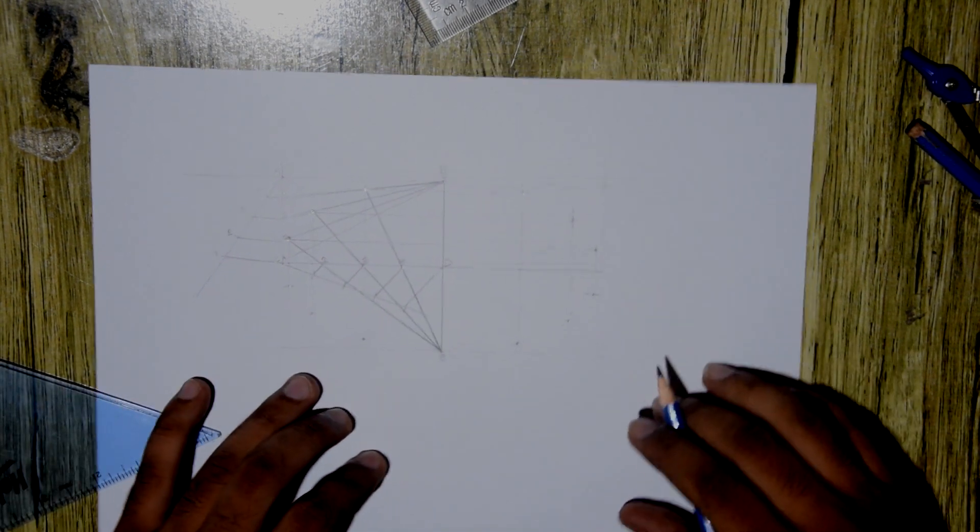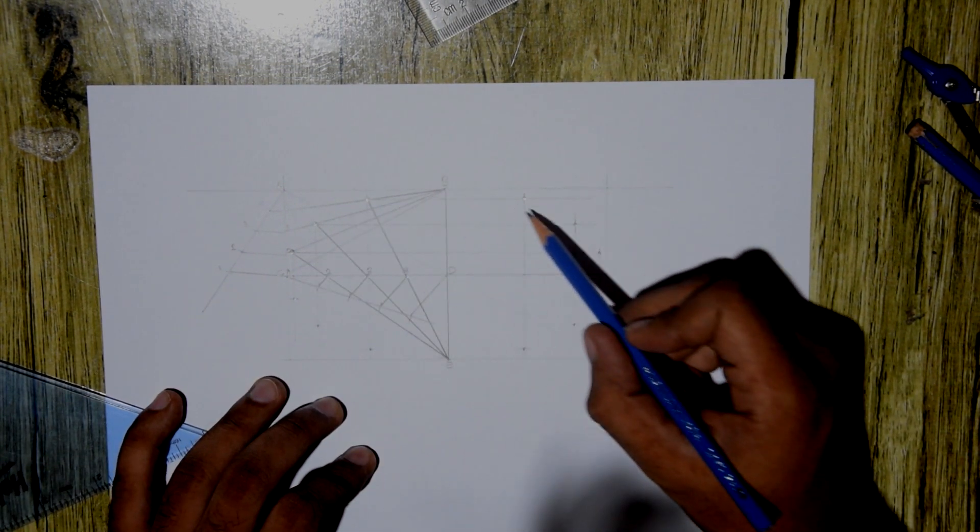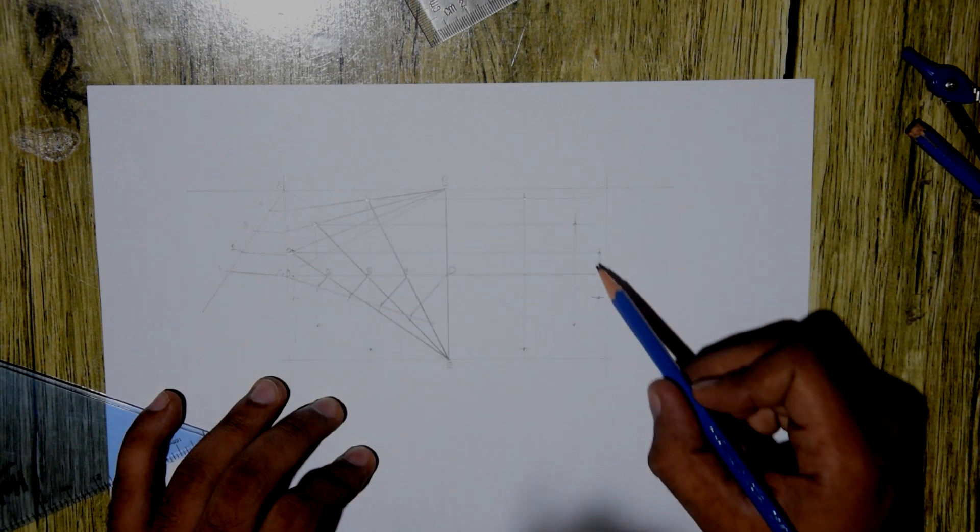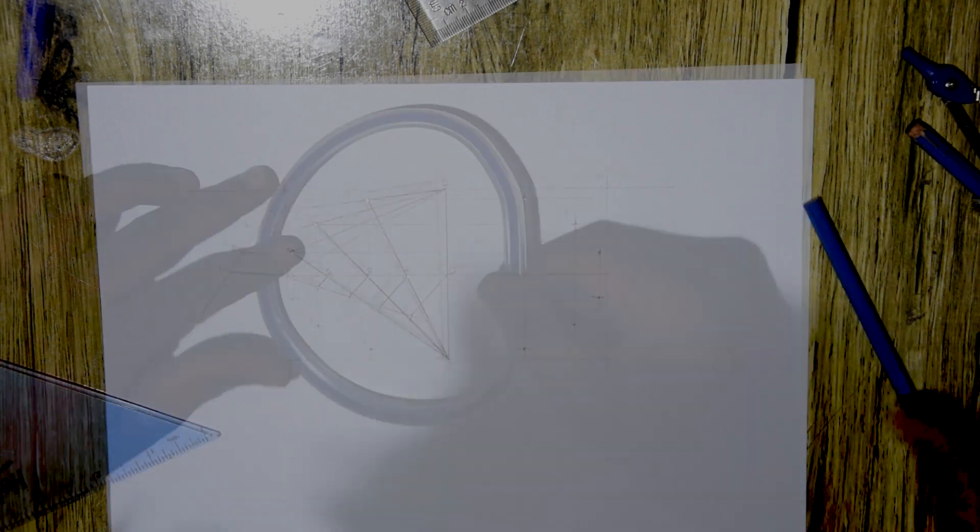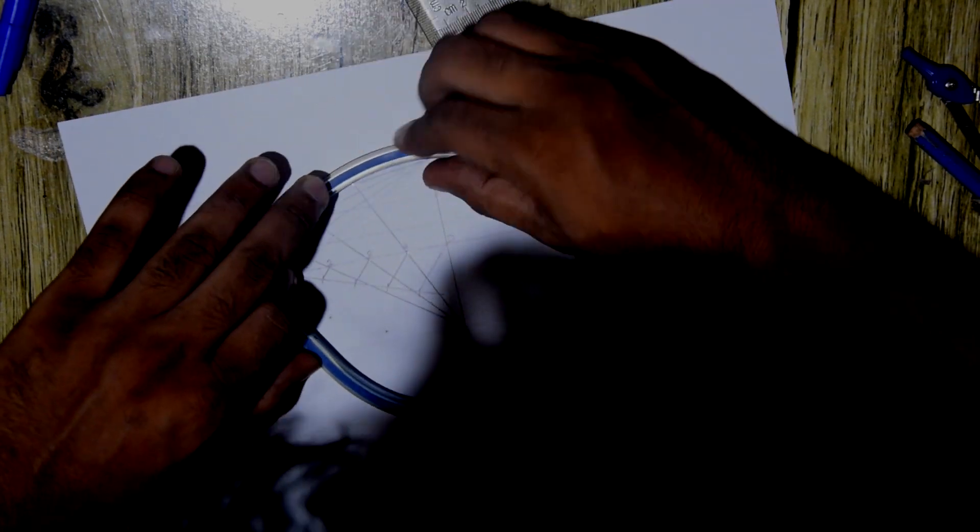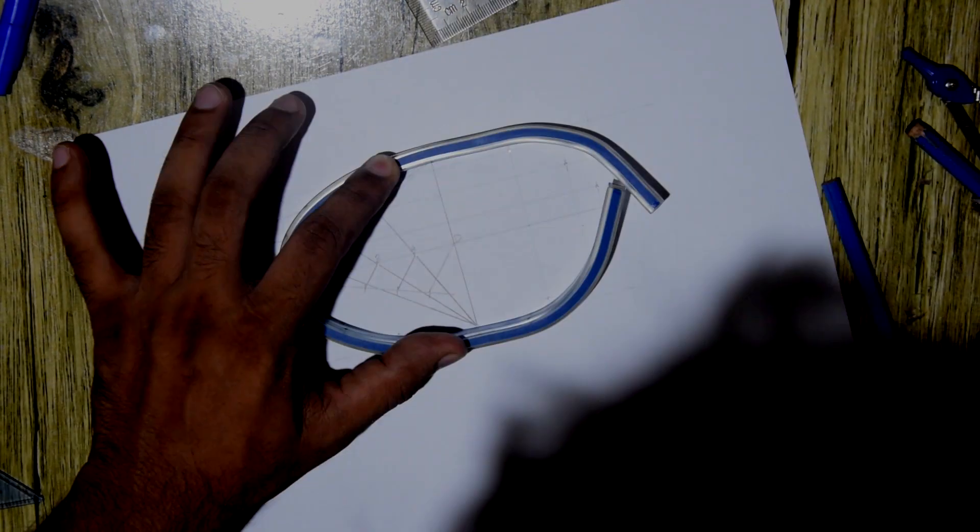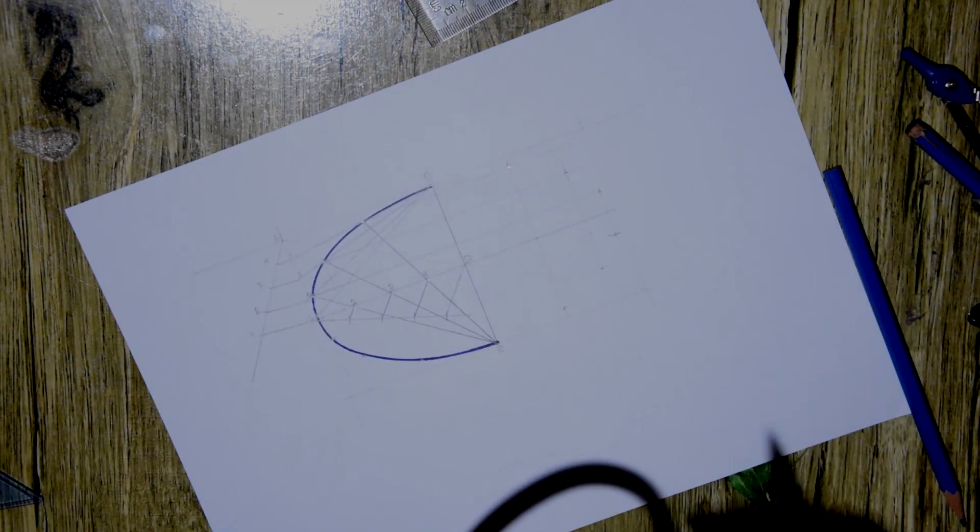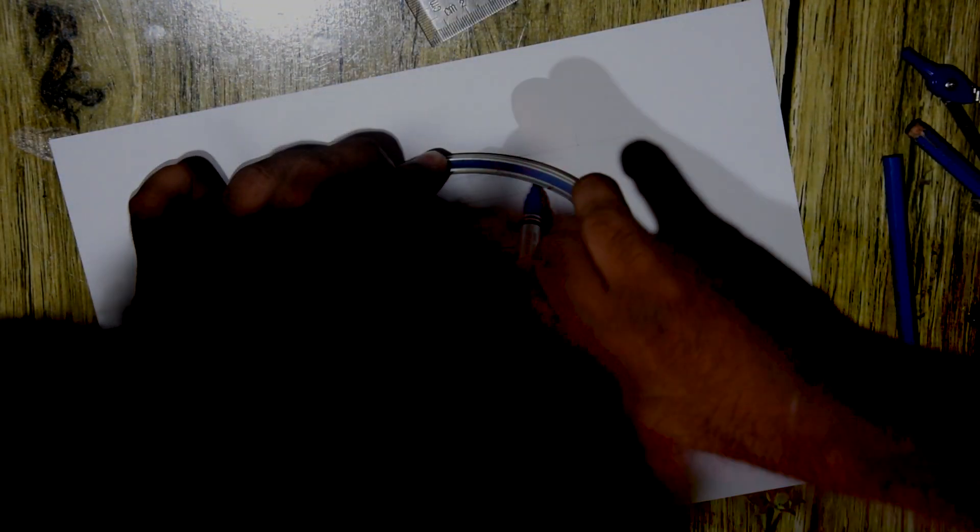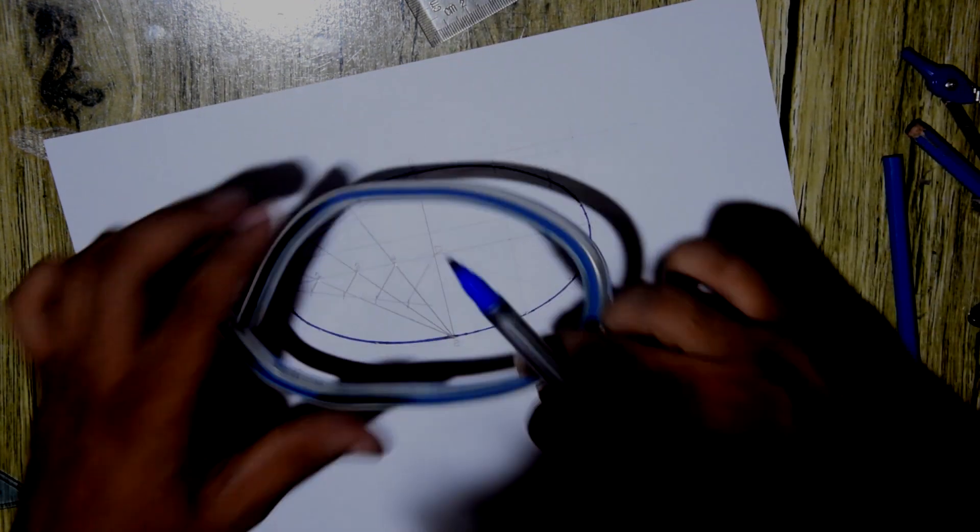OK, now I just have to sketch an ellipse along those coordinates. Last time I did it freehand. Today I will make use of my flexi curve to make the ellipse. Again, if you don't have one, you can still do it freehand. I'm sorry about my head though.